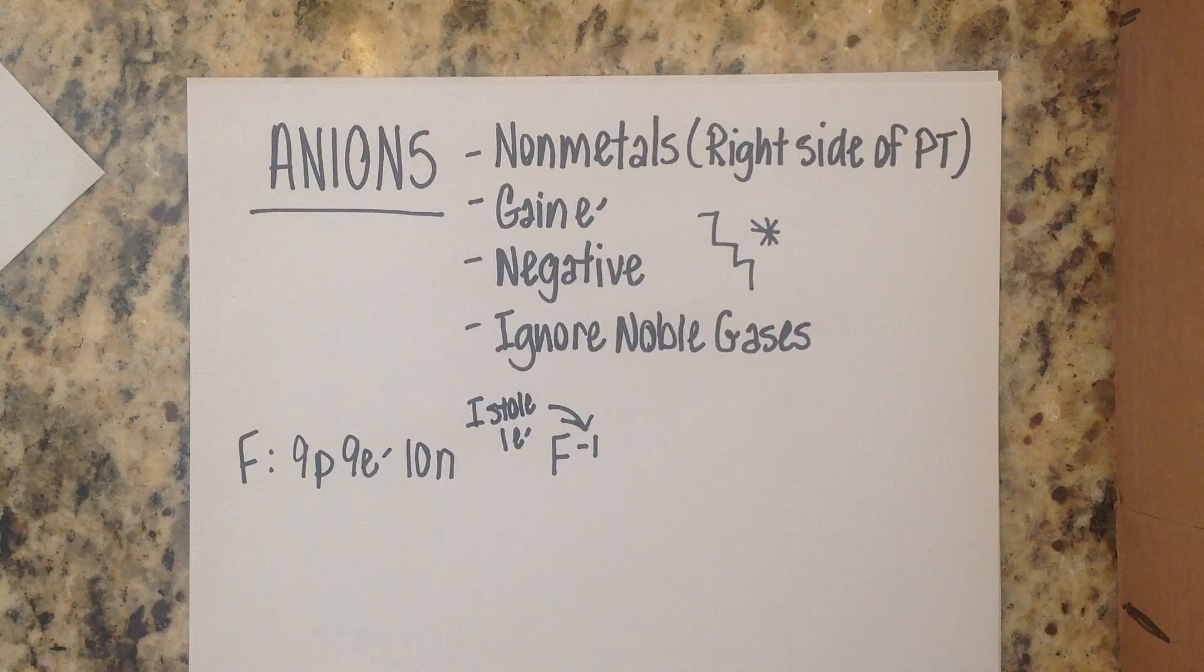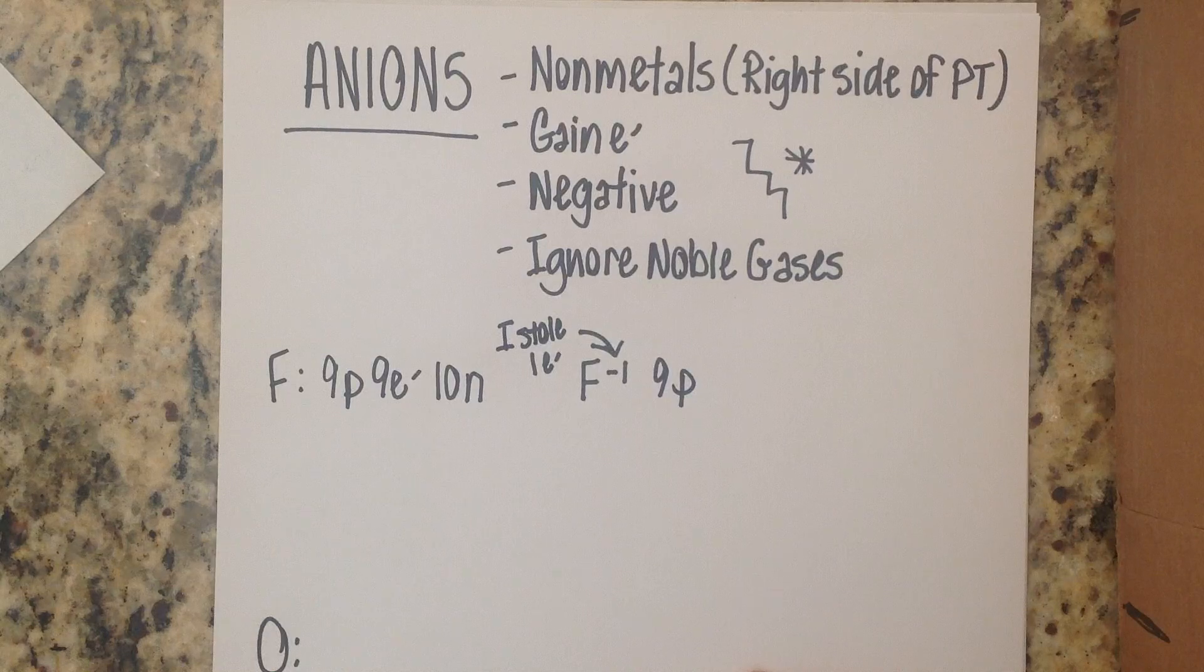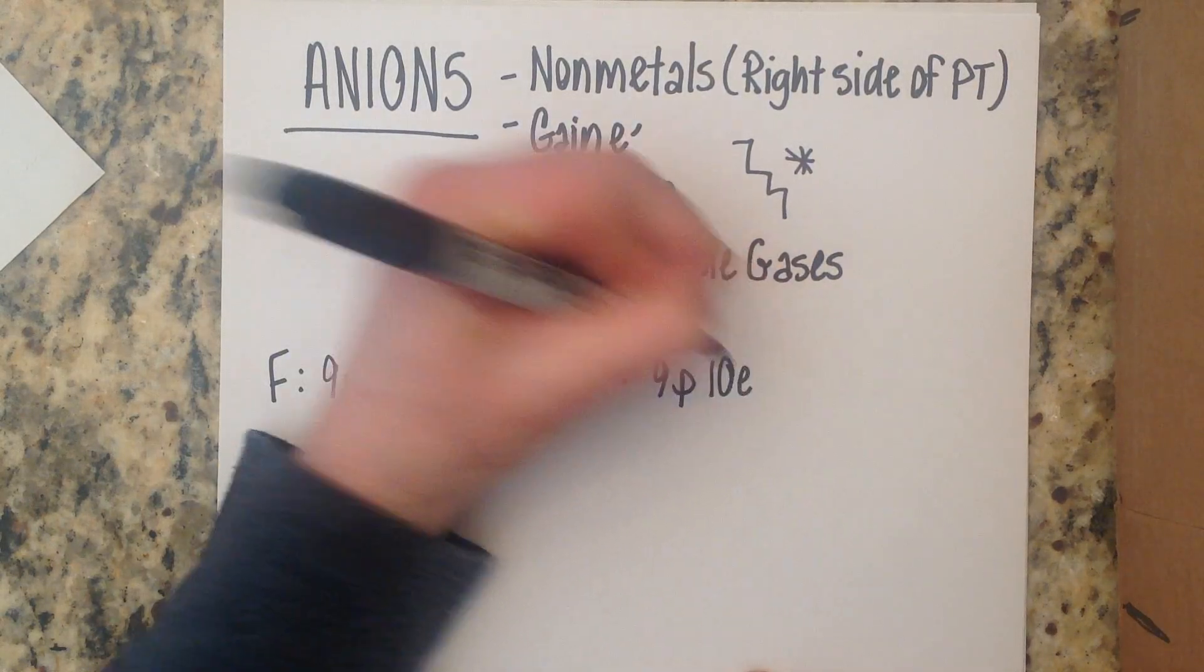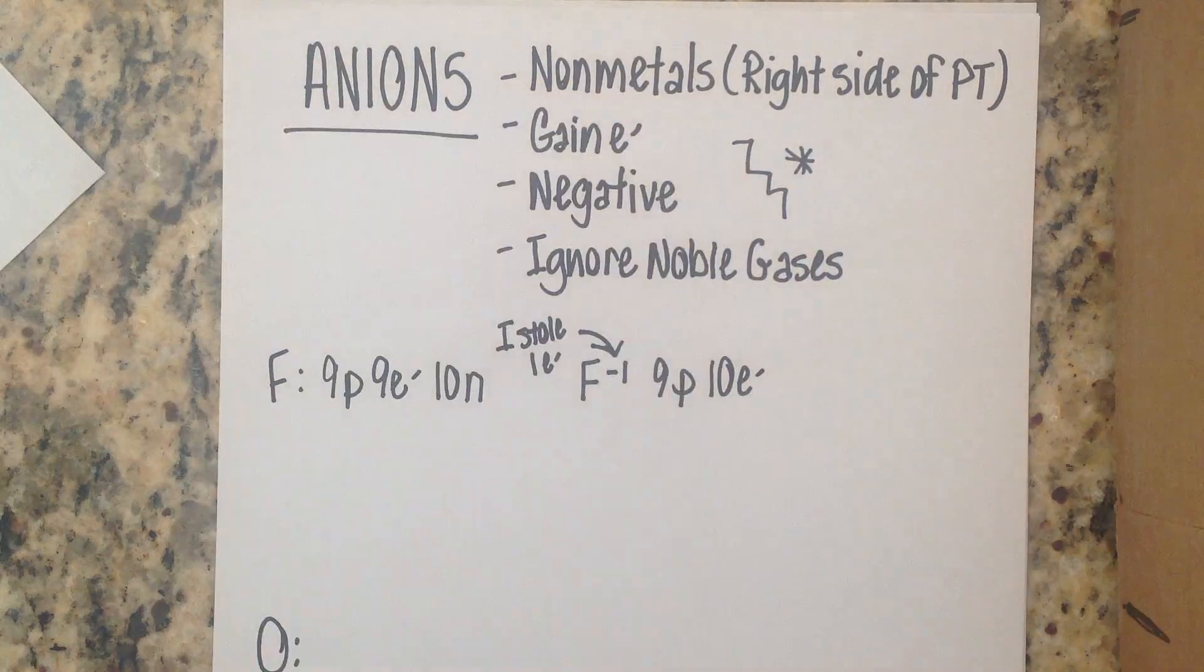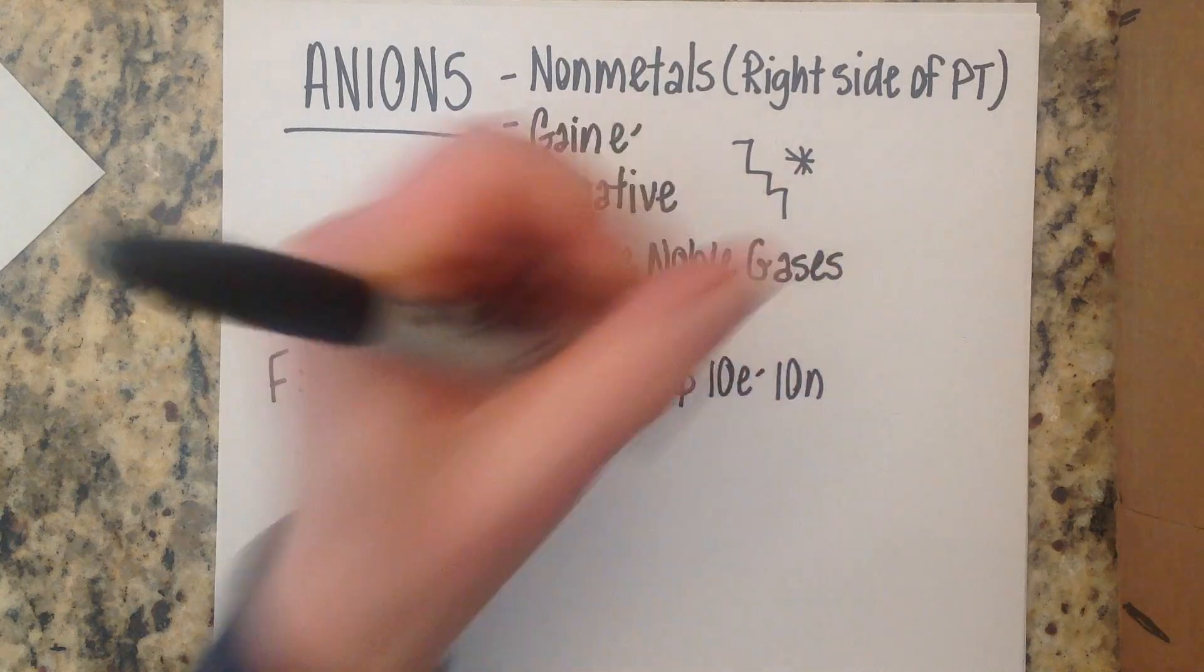So he's kind of just waving that sign around I stole one electron that's what he's letting everybody know. So because it's fluorine we are still nine protons but because he just stole an extra electron there are now 10 electrons and the number of neutrons do not change.